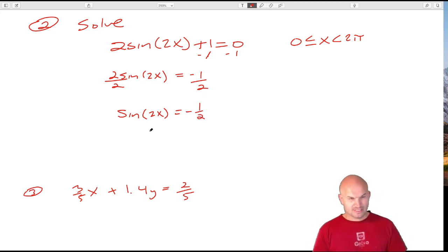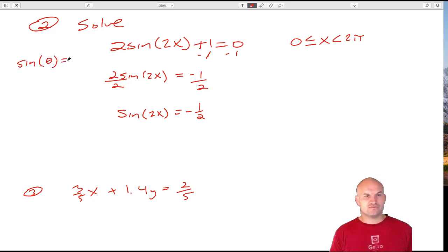Now forget about the 2x for a second. Let's just pretend this is, how would we solve the sine of theta = -1/2? What would be the solutions of that? To do that, we would look at the unit circle and we'd say, alright, when is sine equal to -1/2?